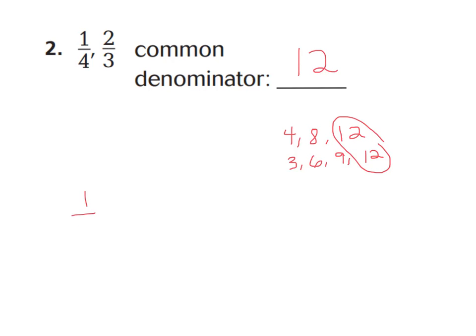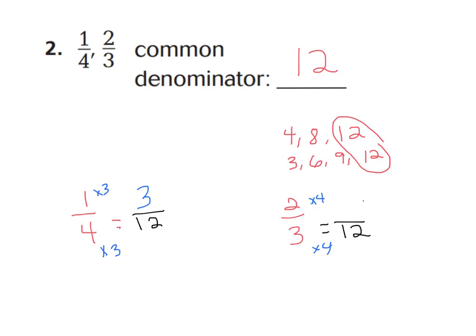Now let's find the equivalent fractions. 1 fourth and 2 thirds — if my new denominator is 12, 1 fourth equals how many twelfths? Well, 4 times what is 12? That would have to be 3. So whatever you multiply your denominator by, you must multiply your numerator by. So we have 3 twelfths. And for 2 thirds, 3 times what is 12? That's 4. So 2 times 4 is 8. So 3 twelfths and 8 twelfths are the equivalent fractions for 1 fourth and 2 thirds.